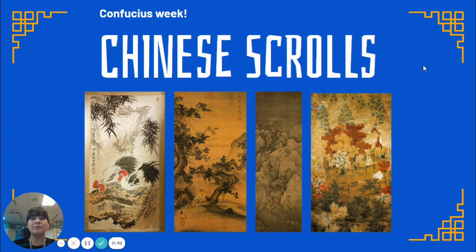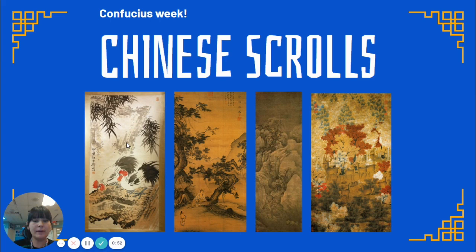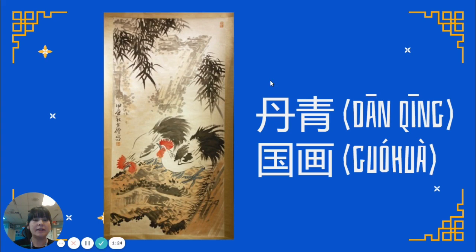Here are some examples of Chinese scroll art and you can see that a lot of them are made with ink — it's more of a thin type of ink that they paint with. And a lot of times the pictures are of nature or landscapes. Landscapes are somewhere outside. Sometimes there's people and they're all very detailed and beautiful. In Chinese, these types of paintings are called danjing or guohua.